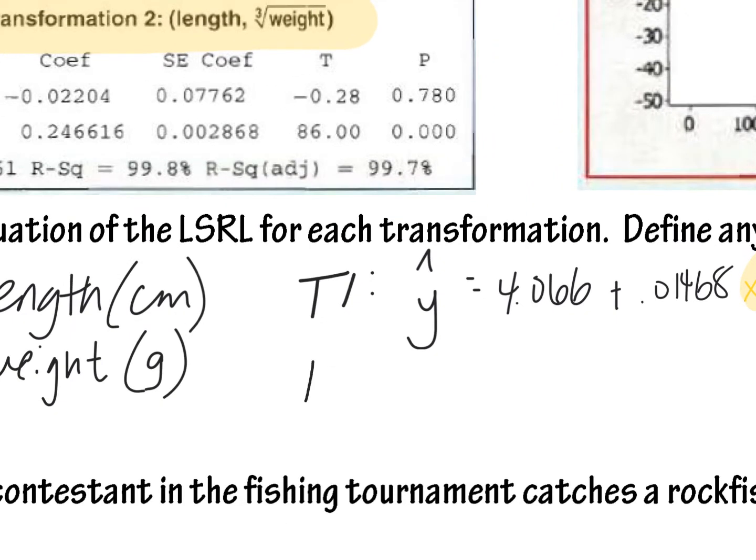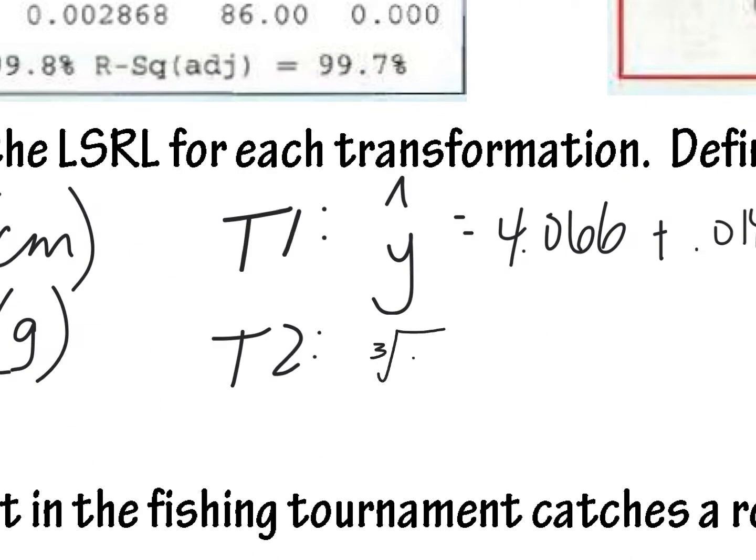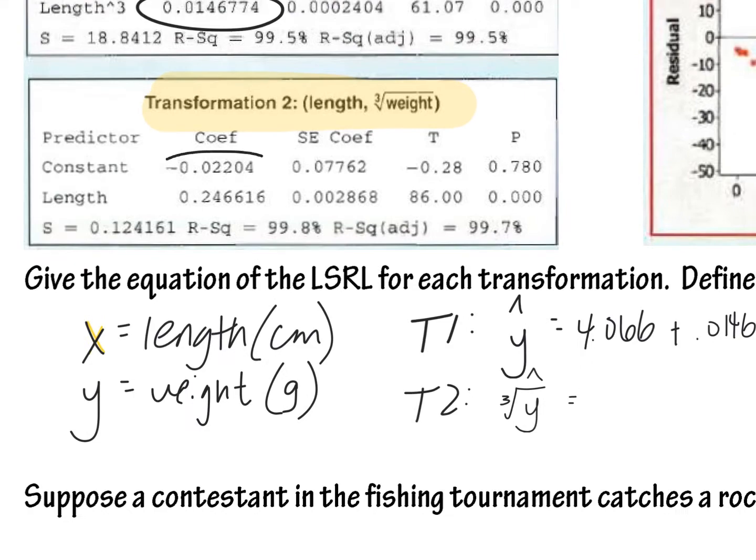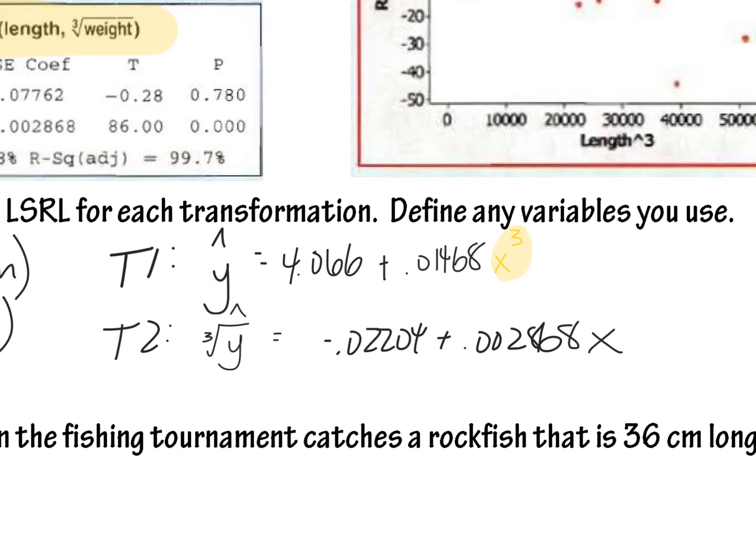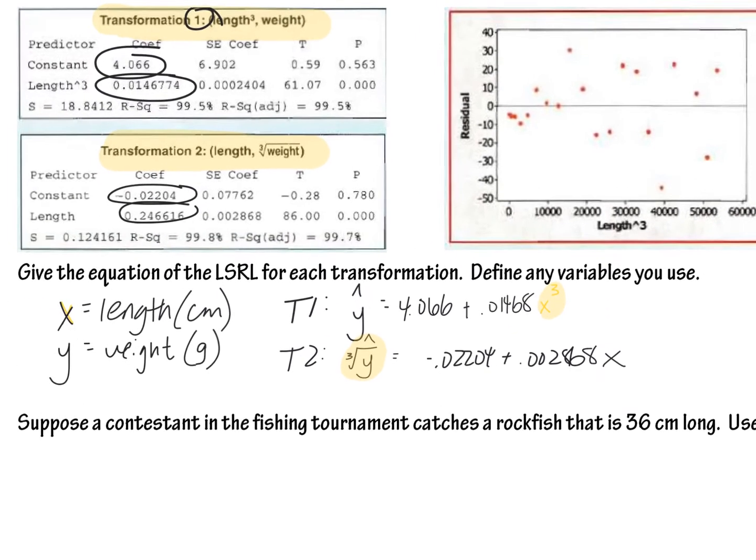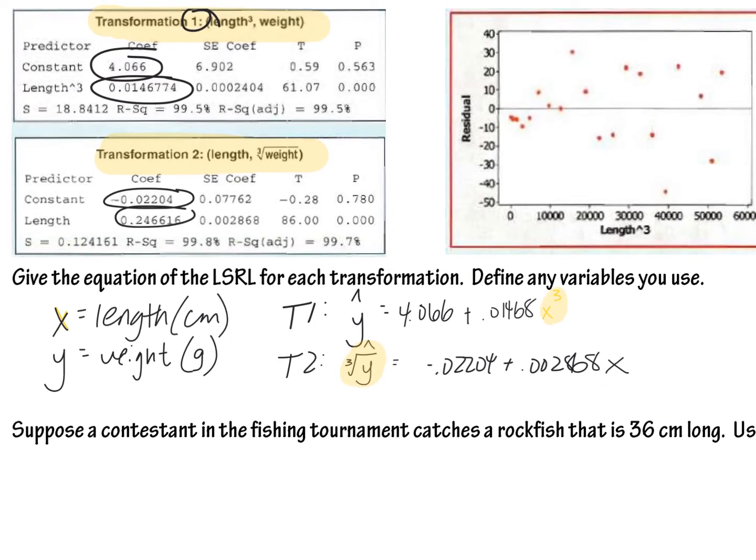So I'm going to do the same thing for transformation two. I still have a y hat. Oh, actually, it wasn't y hat, didn't I cube root all of the y's? So that means that I need to cube root the y in my equation. I'm still going to put my little hat here because it's still going to be a predicted cube root of y, but what was that slope and y intercept? Here was the y intercept, here was the slope. So negative 0.02204 plus 0.002868 regular x. And so again, what we're doing here is I transformed my data. I took the cube root of all the y's, and so therefore, what I needed to do is cube root the y in my formula. So those are my two different transformations. Those are my two different line LSRLs.